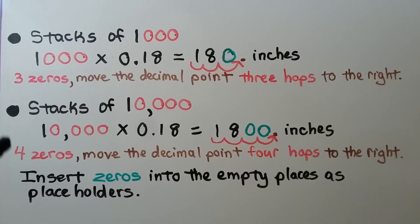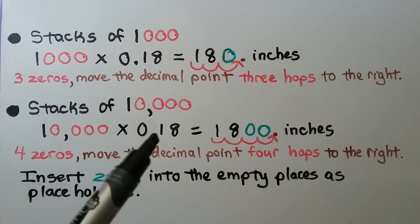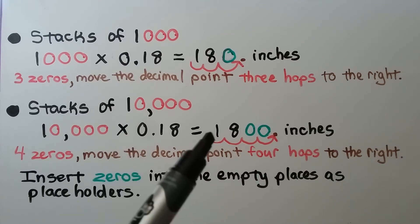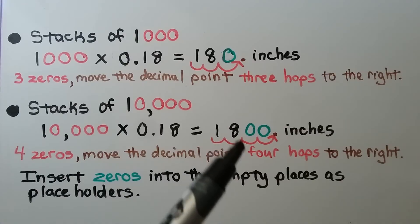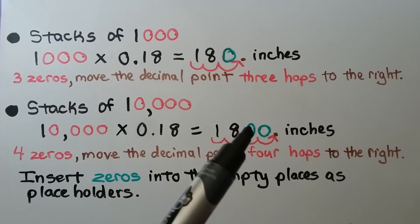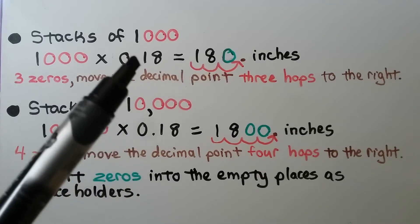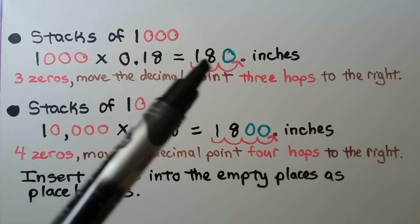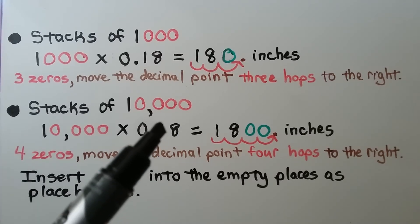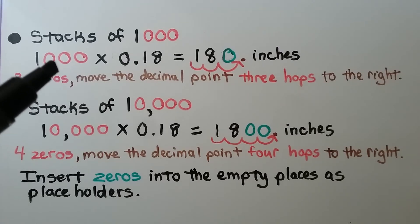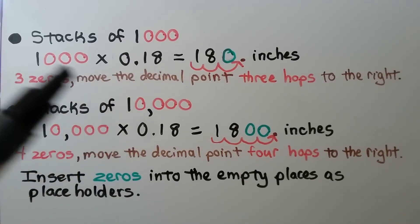If we put them into stacks of 10,000, we have four zeros here, so we're going to move the decimal point four hops to the right. It's going to start here in between the zero and the one, and we're going to move one, two, three, four hops to the right. We're going to have to put a zero in the tens and ones places as placeholders — it would be 1,800 inches for each stack. So we can see that the product is going to involve a one and an eight. The number of zeros tells us how many hops to the right we need to move.